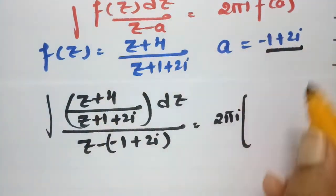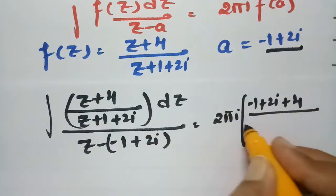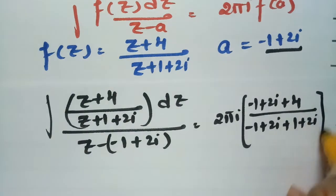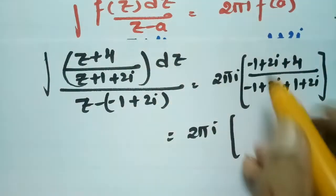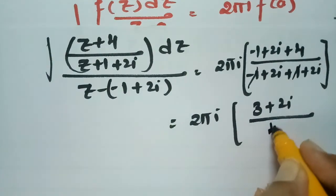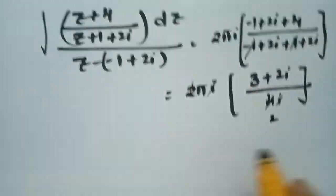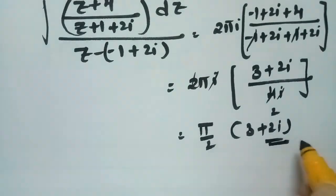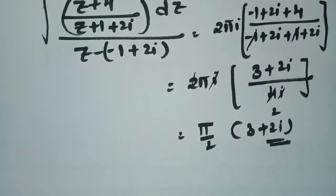Substituting z = −1+2i into f(z): the numerator gives (−1+2i+4) = 3+2i, and the denominator gives (−1+2i+1+2i) = 4i. So f(a) = (3+2i)/(4i). The integral equals 2πi · (3+2i)/(4i), and cancelling 2i from 2πi and 4i gives the final answer: π/2 · (3+2i).